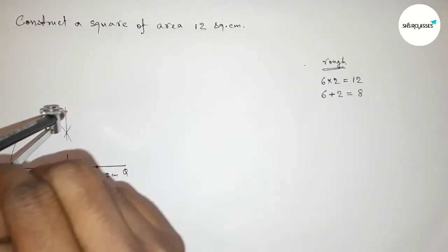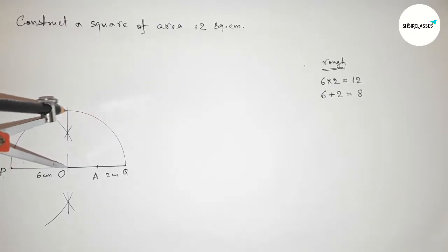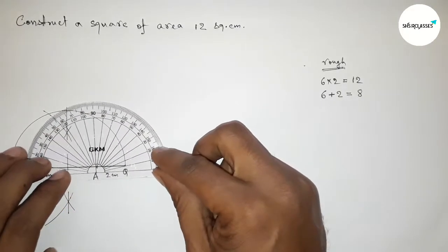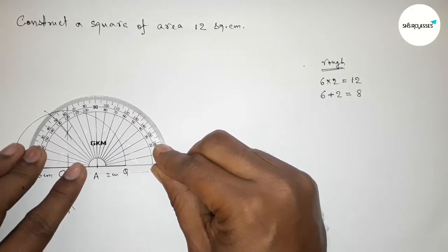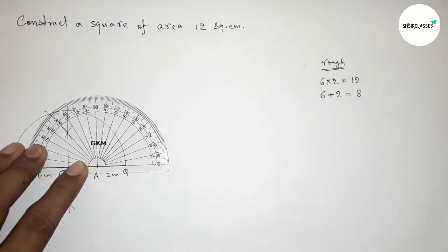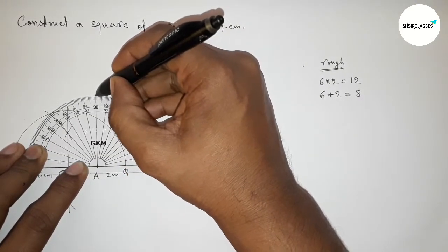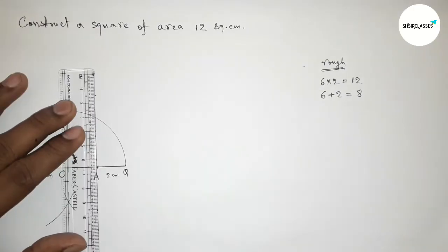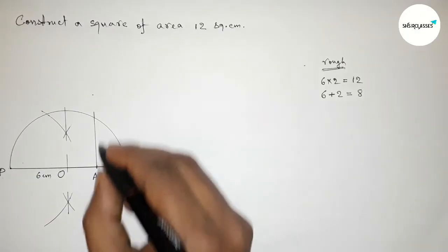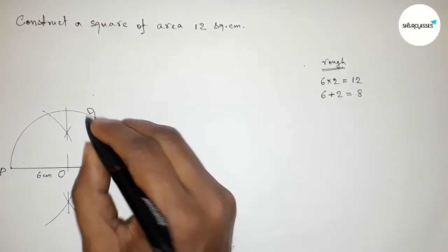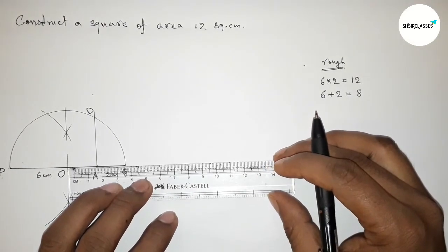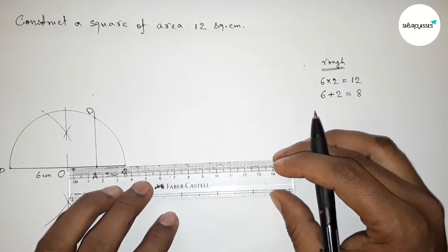Taking the length OQ and OP — both are equal — and drawing a semicircle. Now drawing a 90-degree angle on point A with the help of a protractor, placing the protractor on point A perfectly. This gives 90 degrees. Joining this line so it meets the semicircle at a point — taking that point as D. So we have the length AD.